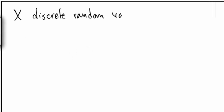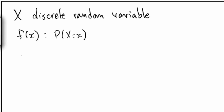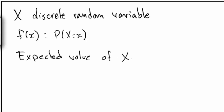Let's discuss the expected value of a discrete random variable. This random variable x has a probability distribution function given by f of x. We would like to define a concept called the expected value of x. It's denoted by E(x) and it's a number. Before we discuss the relevance of this number, let's just learn the mathematical definition without thinking too much about what we're doing.